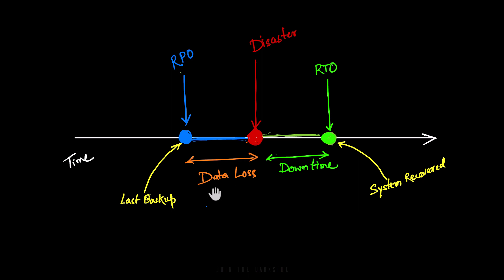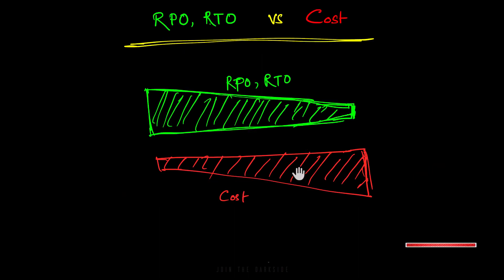We all want zero data loss and zero downtime in our application or business. But cost plays a major role in deciding these two SLAs because the relationship is inverse. For lower RPO and RTO, cost will be higher.